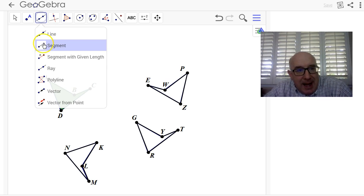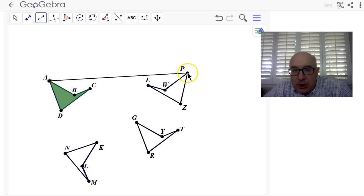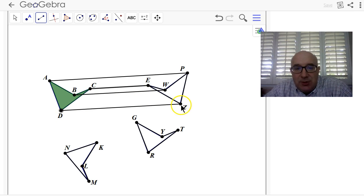Well, A is going to map to P, B would map to W, C would map to E, D would map to Z.